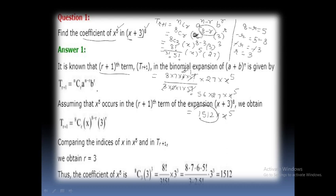This value, 1512, is the coefficient of x^5. Thus, we can find the coefficient of any term in binomial theorem. Thank you. If you like my video, please like and share my channel.